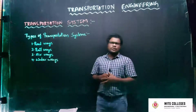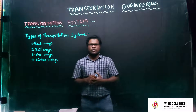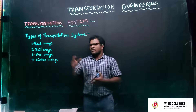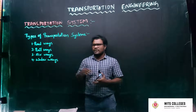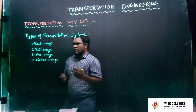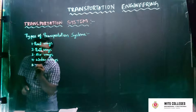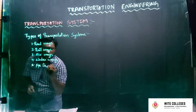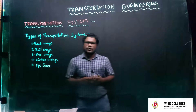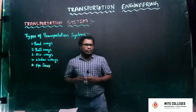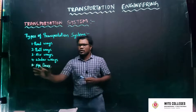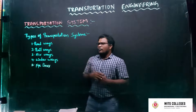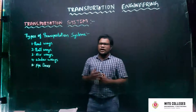Let us discuss what are the different modes of transportation system available. There are four important types of transportation system presently we are using: the first one is roadways, second one is railways, third one is airways, and fourth one is waterways. Nowadays we also use another transportation mode for movement of material — that is pipelines — which are used for moving crude oils, petroleum products, or natural gases from one place to another place.